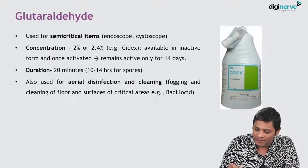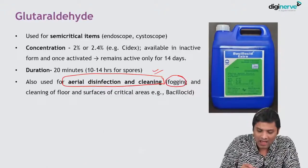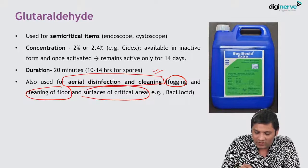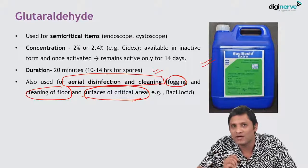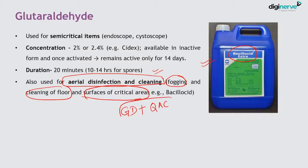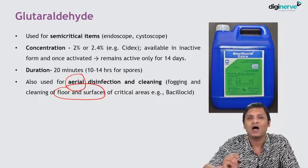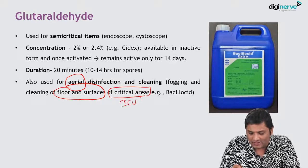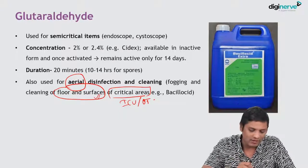Other uses of glutaraldehyde include aerial disinfection such as fogging, and cleaning of floors and surfaces of critical areas. The commercial product available for this purpose is called bacillocid, which is a glutaraldehyde combination product — glutaraldehyde combined with quaternary ammonium compounds. Such commercial products are used for air disinfection as well as floor and surface disinfection of critical areas such as ICU and OT.